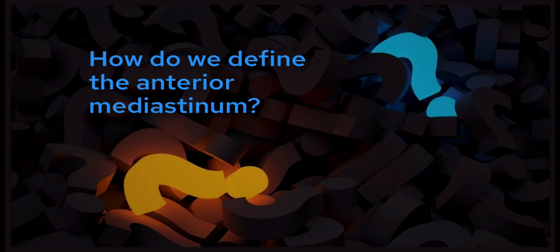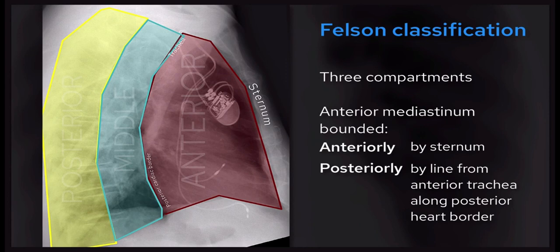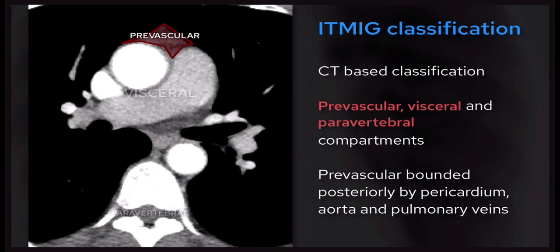How do we define the anterior mediastinum? It's important to recognize that there are different classification systems, with the more traditional models using the lateral chest x-ray. Felson described a commonly used model based on three compartments: the anterior, middle, and posterior mediastinum. The anterior mediastinum is bounded anteriorly by the sternum and posteriorly by a line drawn from the anterior trachea along the posterior heart border. Some models use a fourth compartment, the superior mediastinum, but there is no real clear distinction between the superior and inferior compartments, and lesions are less likely to respect fascial planes. These days lesions are commonly assessed with CT rather than x-ray, and using traditional models mediastinal lesions become more tricky to classify.